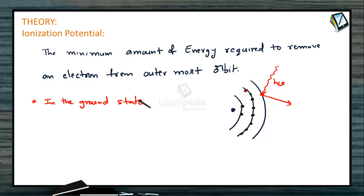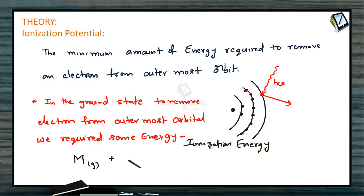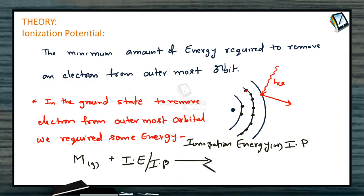In the ground state, to remove an electron from the outermost orbital, we require some energy, called ionization potential or ionization energy. If we take M as a gaseous, neutral, or isolated atom and give it ionization energy, represented as IP, the valency electron is removed from the element, it acquires a unipositive charge, and one electron is released. This is called ionization of the element.